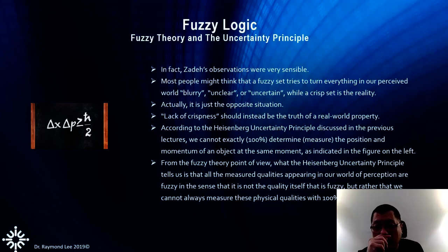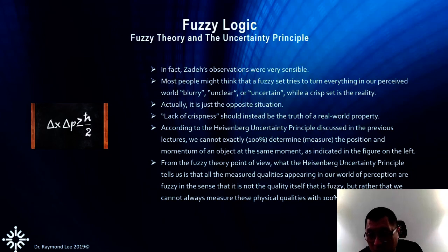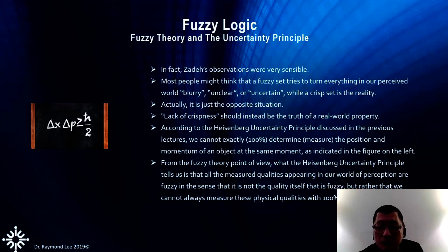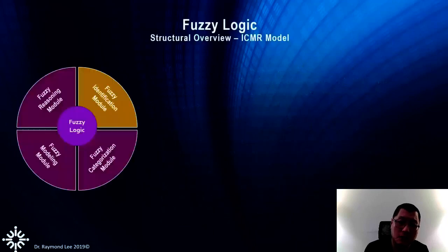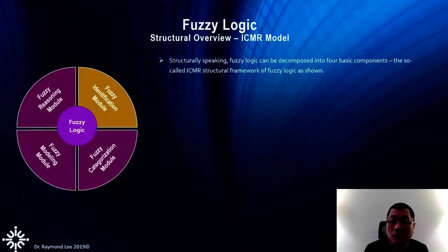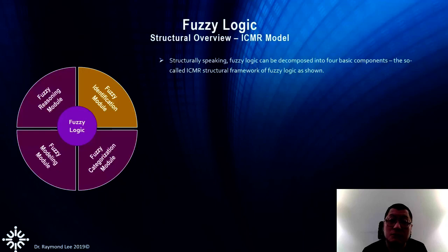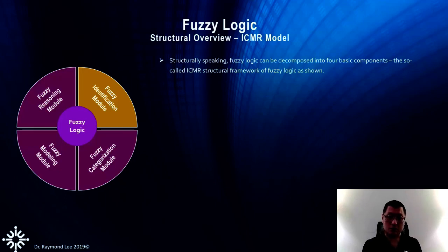Fuzzy logic is simpler in some sense — not talking about multi-worlds but about the existence of multiple realities. Not until you make the decision can it be anything between zero and one. For the fuzzy logic ICMR model — a four-step model — first you identify the problem, then the characterization module where you classify into different fuzzy terms, then the fuzzy model, and finally reasoning: how to answer the question.